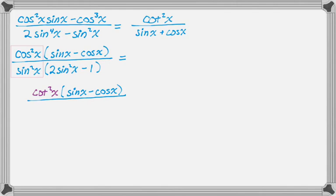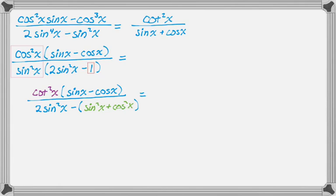I'm going to do basically the same thing as in the last problem: take this 1 and expand it into sine squared plus cosine squared. So the denominator becomes 2 sine squared minus the quantity sine squared plus cosine squared. If you've done a lot of identities at this point, you know we're basically done — we're just going to combine things, factor, and cancel.